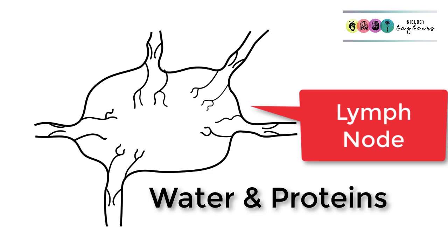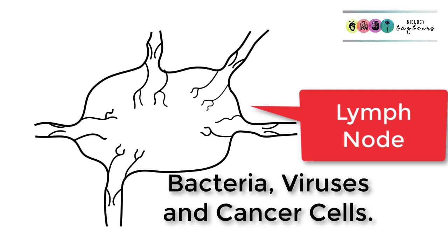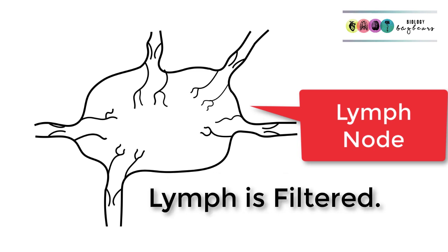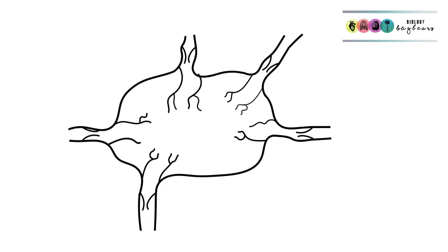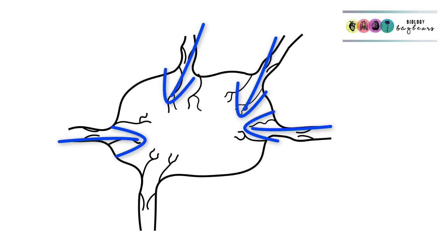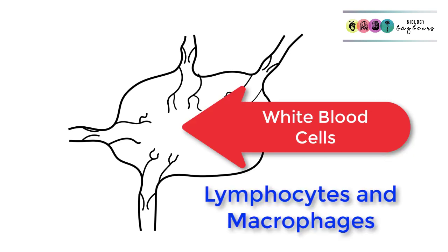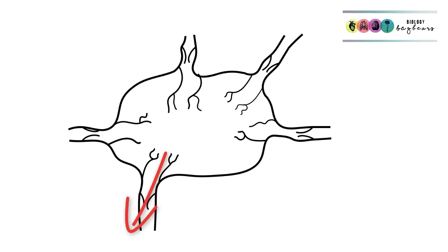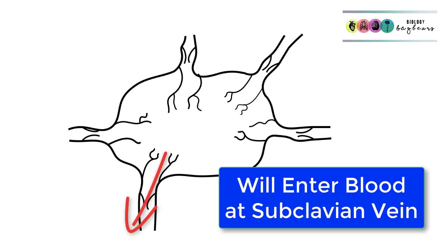Lymph can also contain bacteria, viruses, and cancer cells, which cannot be allowed to return to the blood. So lymph is filtered through tiny bean-like structures called lymph nodes. Inside these lymph nodes are many types of white blood cells, particularly lymphocytes — B cells and T cells — but also macrophages, which deal with any pathogens, cancer cells, and viruses. Once filtered, the lymph leaves the nodes and eventually enters the subclavian vein at the base of the neck, returning to the blood.